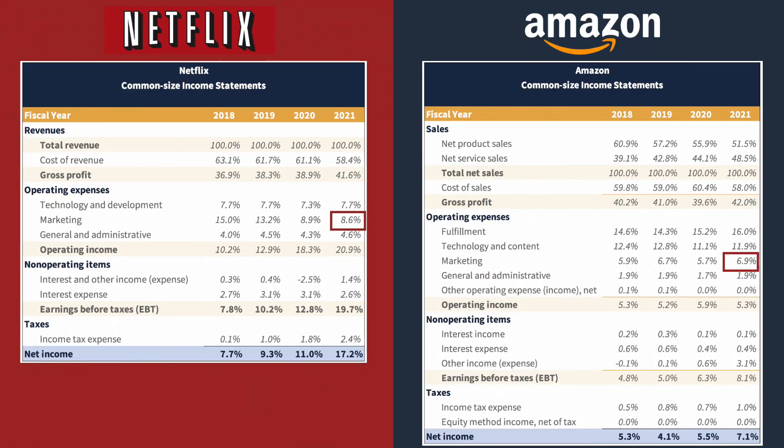Amazon is a lot larger company than Netflix — its net sales were 15 times larger than Netflix's revenues in 2021. Thus, we would expect Amazon to spend more on marketing. But when we look at marketing costs as a percentage of sales, Amazon actually spent a lot less than Netflix in 2021: 6.9% for Amazon compared to 8.6% for Netflix.